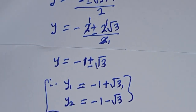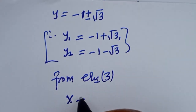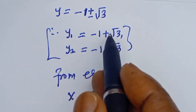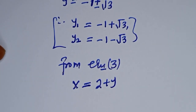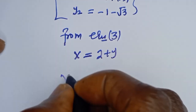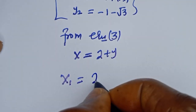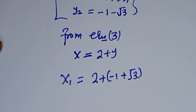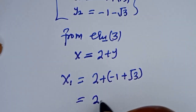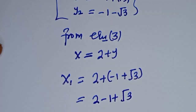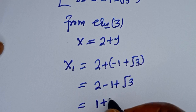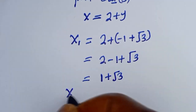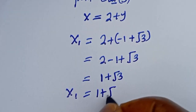We can solve for x using equation 3: x equals 2 plus y. When y₁ equals minus 1 plus √3, then x₁ equals 2 plus (minus 1 plus √3), which equals 2 minus 1 plus √3, giving x₁ equals 1 plus √3.